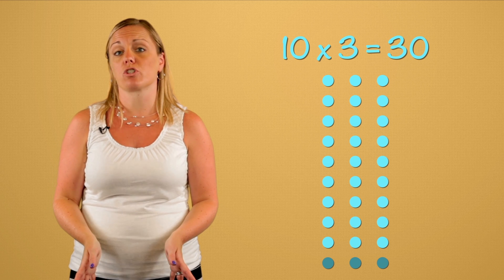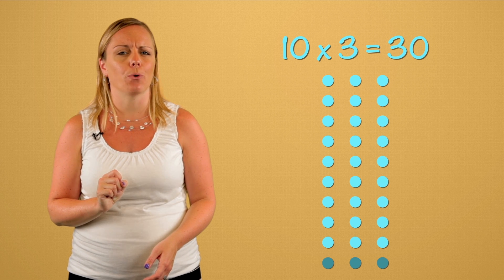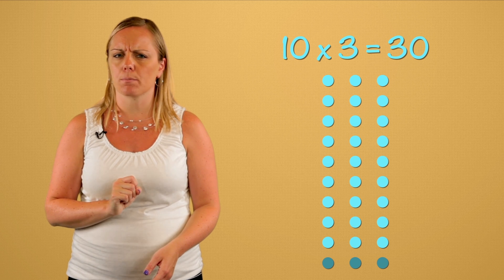Now, what does this array represent? Ten rows of three is ten times three. That equals thirty. But what can we do to get us back to nine times three?